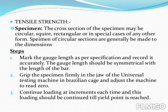Steps to be followed for the tensile test: mark the gauge length as per specification and record it accurately — the gauge length should be symmetrical with the length of the bar. Grip the specimen firmly in the jaw of the universal testing machine in a Brazilian cage and adjust the machine to read zero. Continue loading at increments until the yield point is reached.